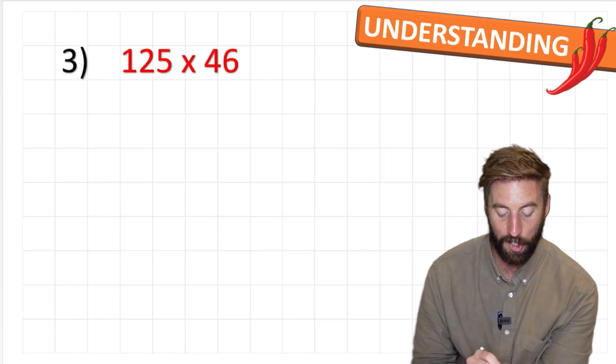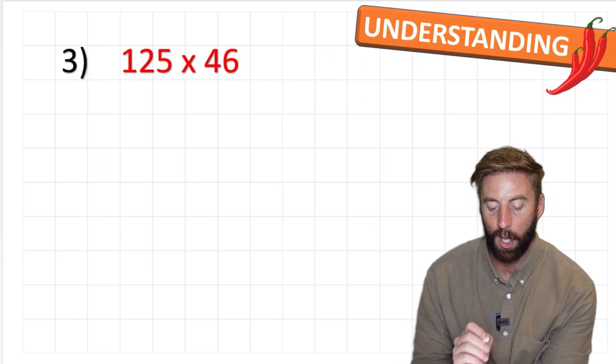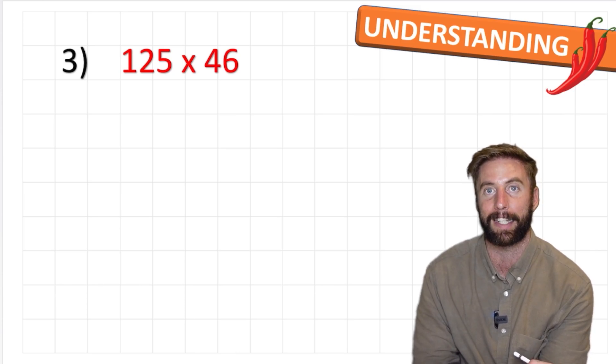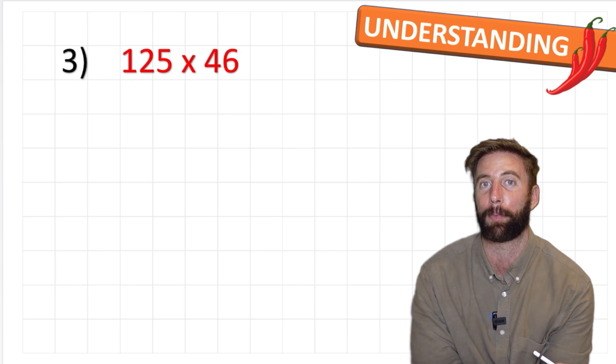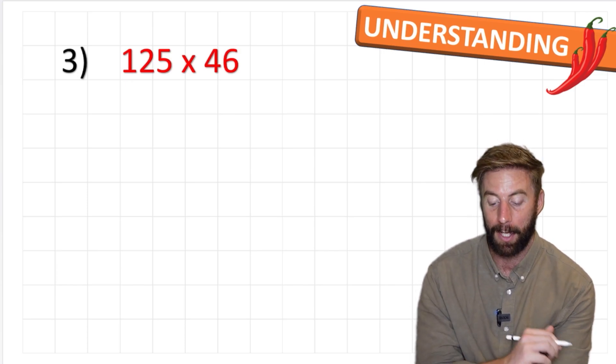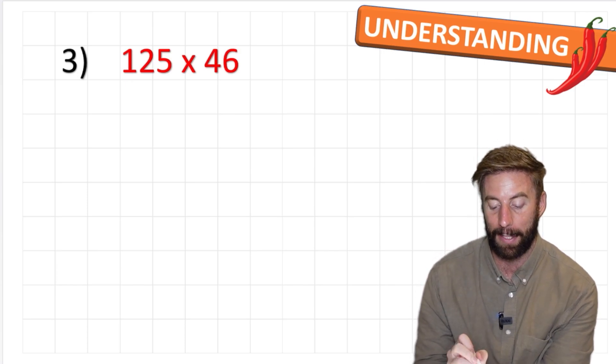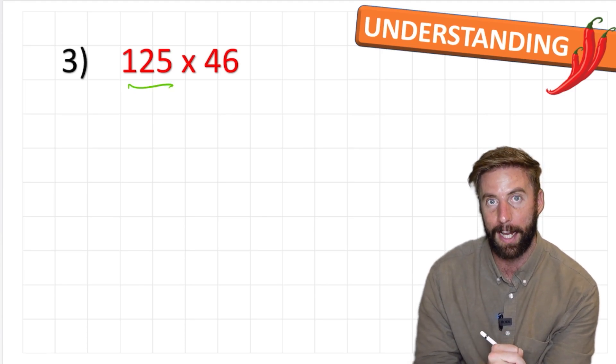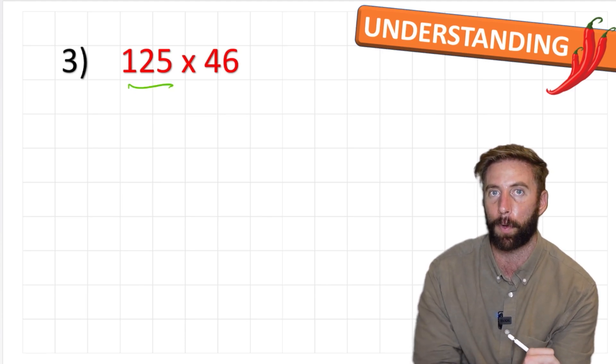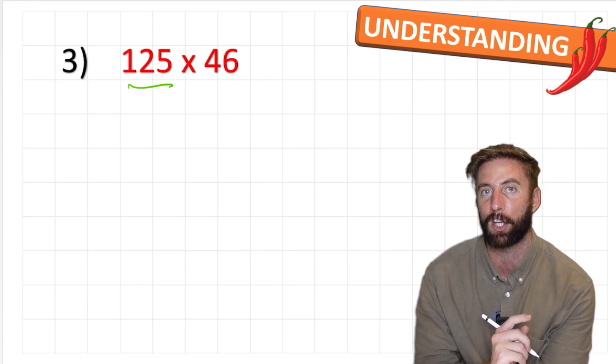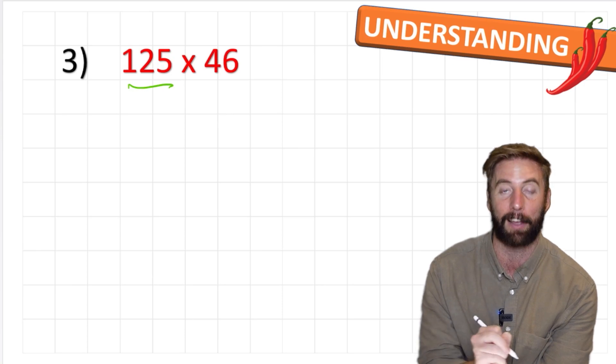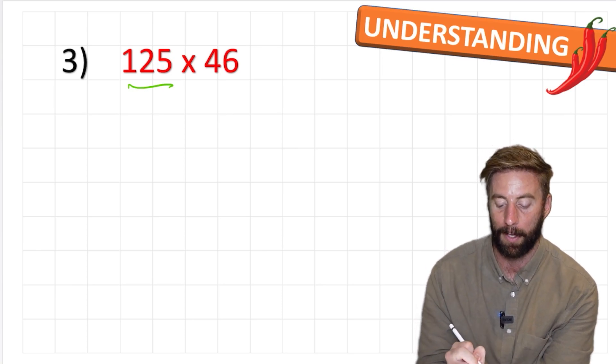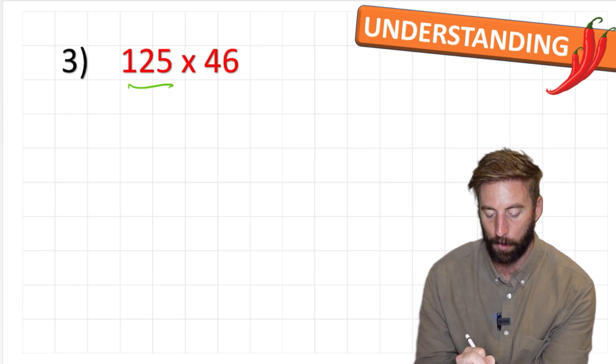Okay, let's look at our last question. Our red chili challenge: 125 times 46. Now I'm going to let you in on a secret. This is actually not any harder, it's just a bit longer with another step. We now have a three digit number which means we're now going to have three lines in our grid. Remember multiplication is commutative. I'm going to choose to have three horizontal lines and two vertical.